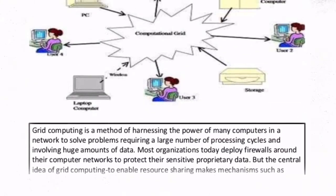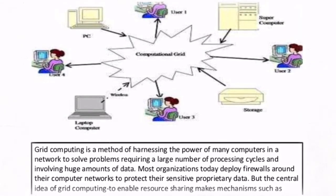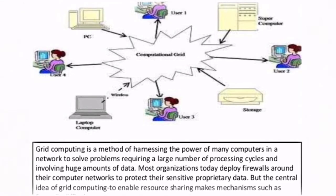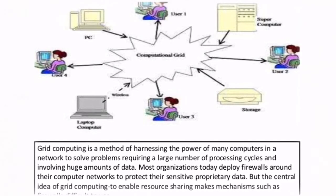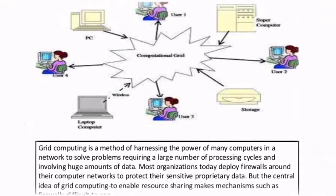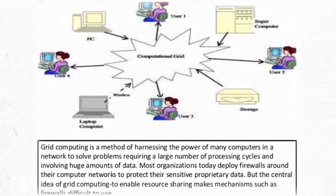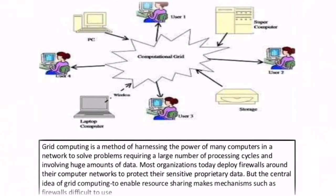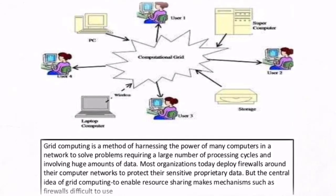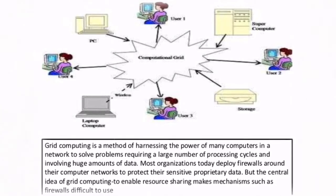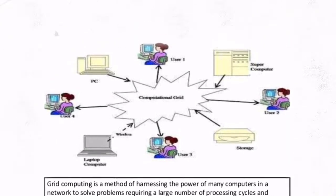Grid computing is a method of harnessing the power of many computers in a network to solve problems requiring a large number of processing cycles and involving huge amounts of data. Most organizations today deploy firewalls around their computer networks to protect sensitive proprietary data, but the central idea of grid computing — enabling resource sharing — makes mechanisms such as firewalls difficult to use.